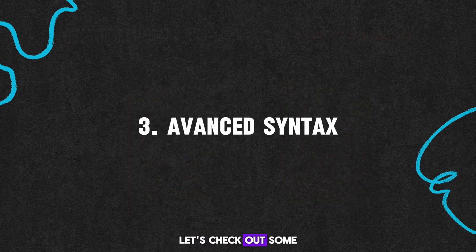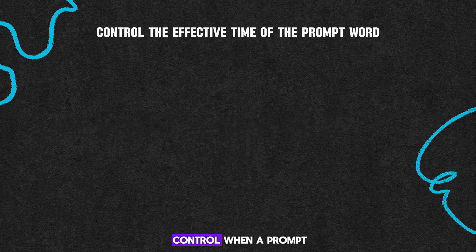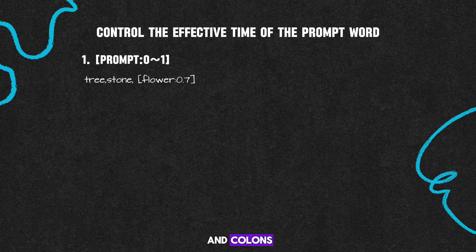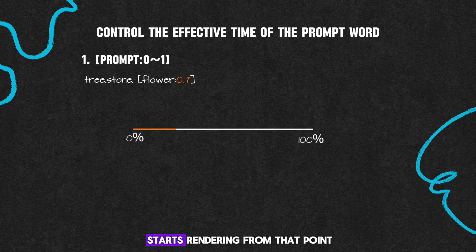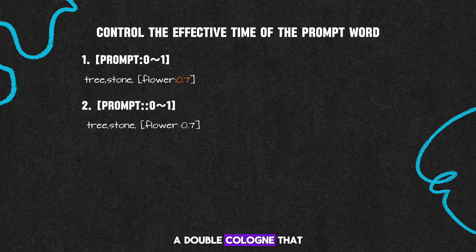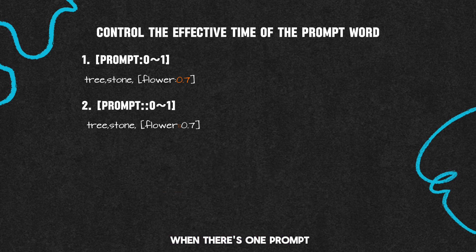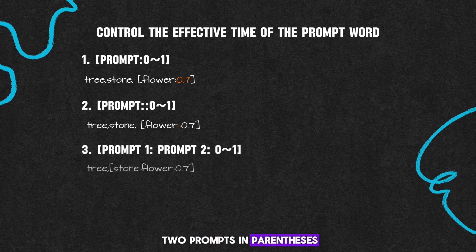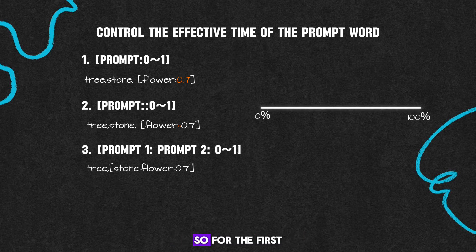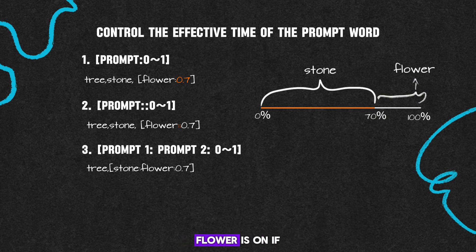Let's check out some advanced syntax. How do we control when a prompt kicks in? You can use a combo of square brackets and colons. A number after the colon means the prompt starts rendering from that point. A double colon means the prompt in brackets renders until that point. When there are two prompts in brackets separated by a colon, for the first 70% of the rendering, the first prompt is on, and for the next 30%, the second prompt is on — for example, stone for 70% and flower for 30%.